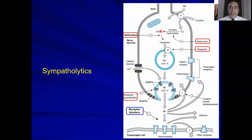The second step — from DOPA to dopamine — is inhibited by the drug alpha-methyl-dopa. Then the storage of norepinephrine in the vesicle is inhibited by the drug reserpine. Finally, norepinephrine needs to be released from the nerve ending, and guanethidine and bretylium can inhibit the release of norepinephrine from the nerve ending.